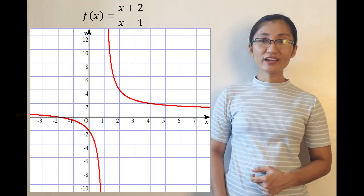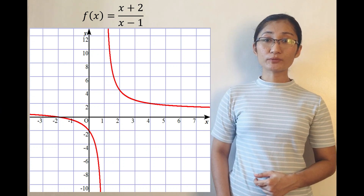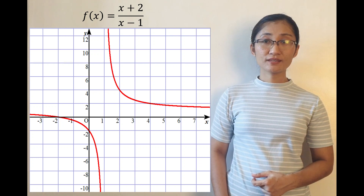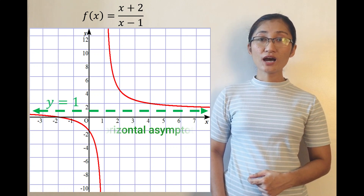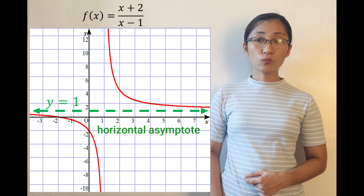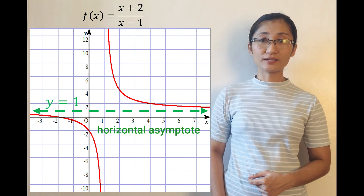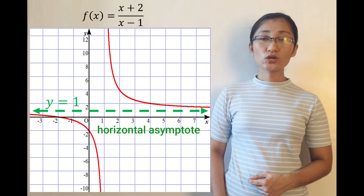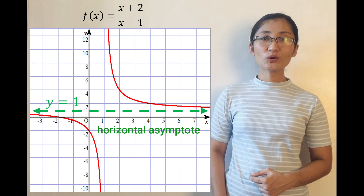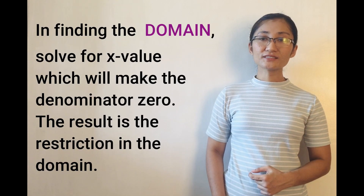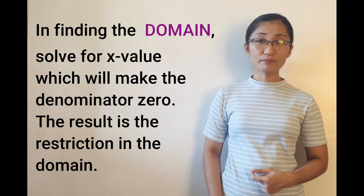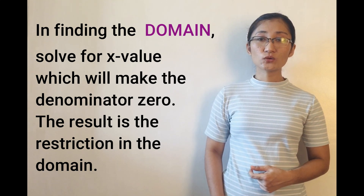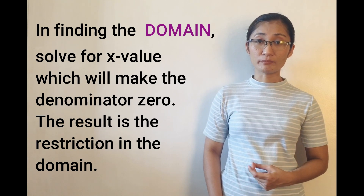On the other hand, y values of the points are all real numbers except for positive 1. That is why there is a horizontal asymptote at y equals 1. That explains the range: all real numbers except y equals 1. Determining the domain is easy since you just solve for x values which will make the denominator 0 — and that is the restriction in the domain.